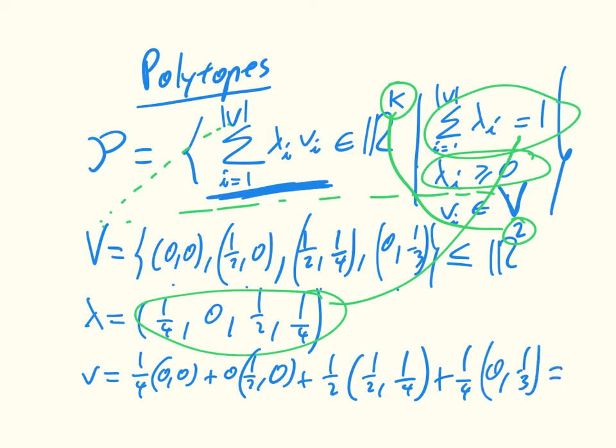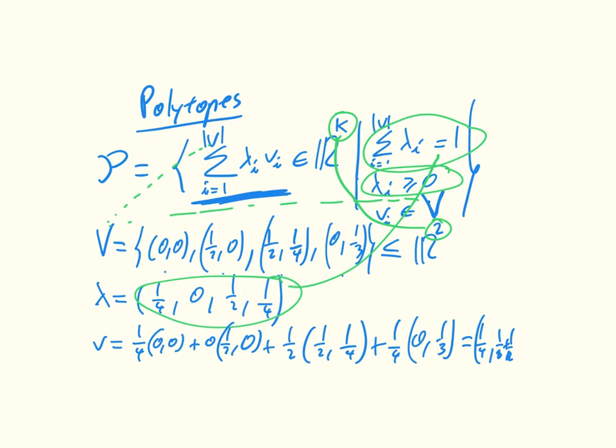And that is equal to (1/4, 1/8 + 1/12). So that element v is an element of our polytope. All elements for all possible lambdas that are this weighted sum over elements of big V are inside our polytope.